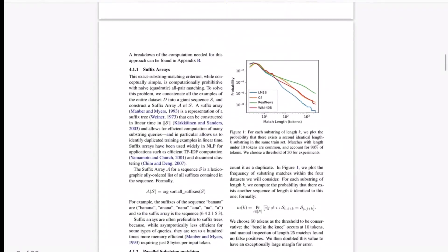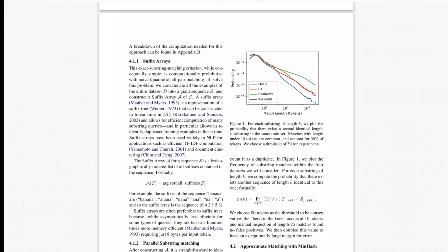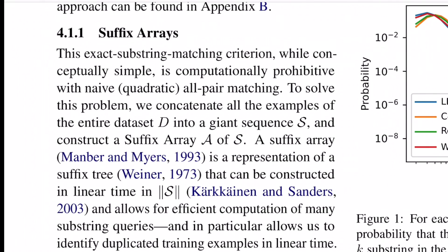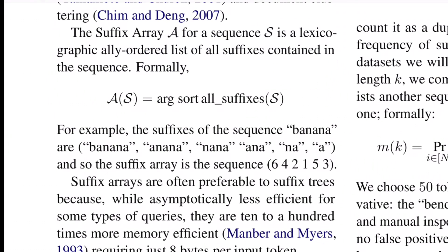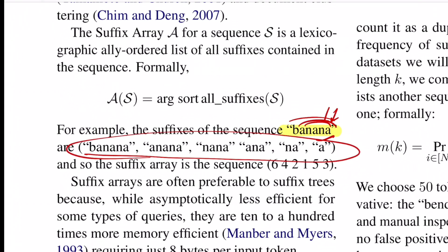Performing this operation is quite challenging because for every example you compare with all others, making complexity quadratic. To address this, they use a data structure called suffix arrays, where the idea is to create a lexicographically sorted list of all possible substring suffixes by concatenating all examples in the dataset into one raw string. For example, for the word 'banana' you get six substrings — a, na, ana, nana, anana, banana — and you sort them lexicographically to get the suffix array.